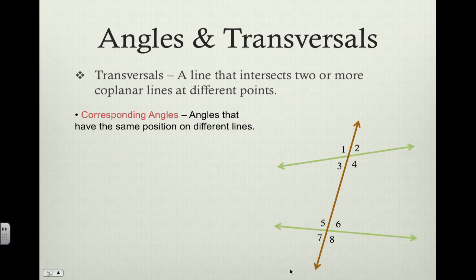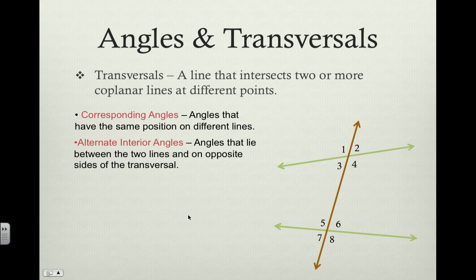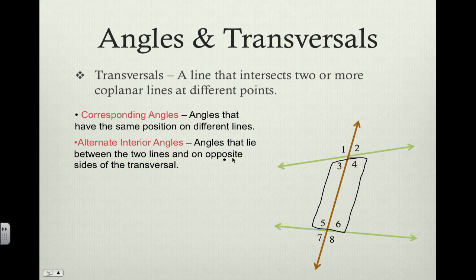Now we're going to learn about alternate interior angles. The definition says these are angles that lie between the two lines and are on opposite sides of the transversal. So we're only looking at angles that lie between the two lines. Our first pair of alternate interior angles would be angle three and angle six — these are on opposite sides of our transversal and lie in between the two lines. So angle three and angle six are alternate interior angles.